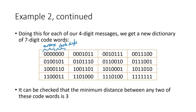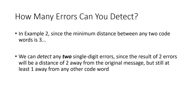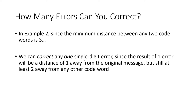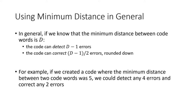Since the minimum distance between any two code words is three, we can detect any two-digit errors — because two mistakes still leave us at least one away from any other valid message. In general, if we add even more check digits so the minimum distance between any two code words is some number d, then that allows us to detect d minus one errors, and correct (d minus one) divided by two errors.